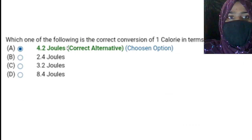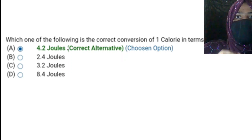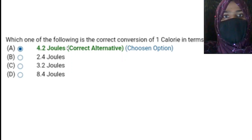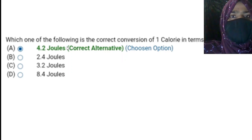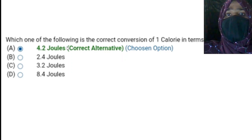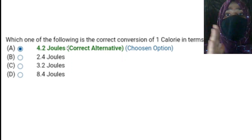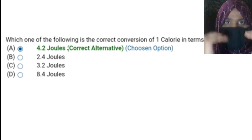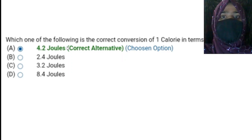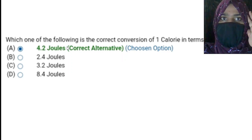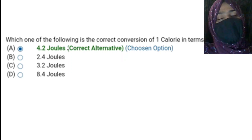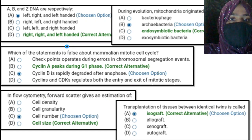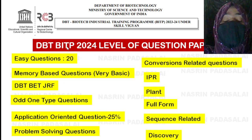Next, conversion-related questions — for example, how do you convert temperature from Kelvin to Celsius. Those are very simple, equivalent to NEET or JEE level. Don't think the DBT BITP question paper will be hard — it will be easy. Even a below-average student can clear it. Don't worry about the score; just focus on getting 50 marks out of 100 to go to the next round, the interview.